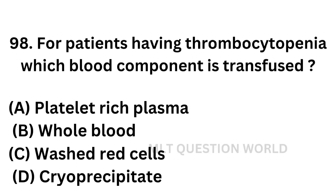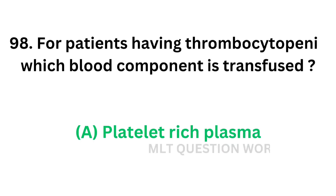Question number 98: For patients having thrombocytopenia, which blood component is transfused? Option A: platelet rich plasma. Option B: whole blood. Option C: washed red cells. Option D: cryoprecipitate. Thrombocytopenia means low platelet count, so we have to transfuse platelet rich plasma to the patient. The correct answer is Option A — platelet rich plasma is needed for patients having thrombocytopenia.